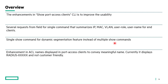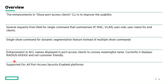Next is the enhancement in ACL names. This enhancement is about ACL name display. Previously, ACL names were displayed as 'radius-' followed by a random number generated. This is not customer-friendly because customers are not able to identify the actual ACL name. For that reason, this enhancement will bring in the actual ACL name display. This feature is supported on all port access security enabled platforms.